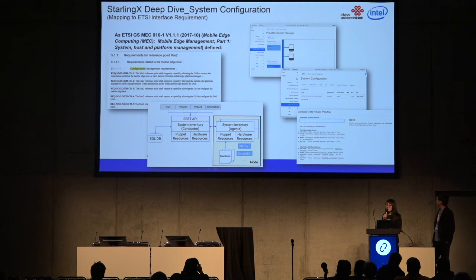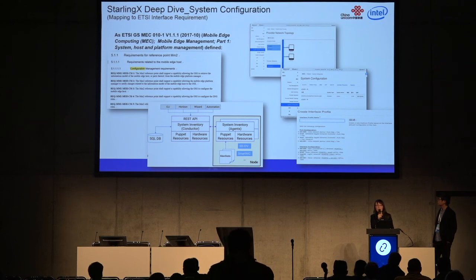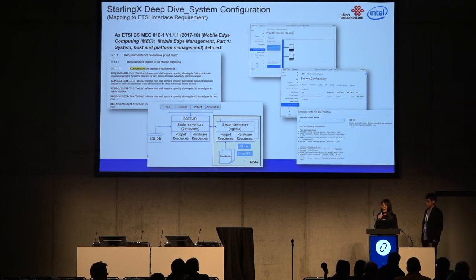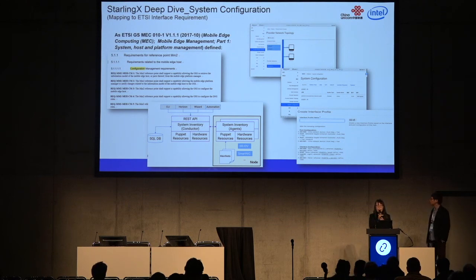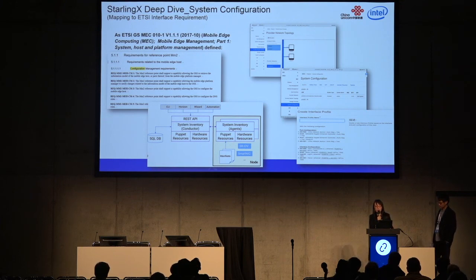This page is about the system configuration service. The system management service provides management functions for deployment and configuration — for example, it can discover new nodes at the edge side and manage installation and configuration parameters such as Neutron config agent parameters. The left picture is also related content from the ETSI MEC spec and the right side shows three UI page snapshots. A very important feature here is the network topology operation UI, which is a missing feature in upstream OpenStack and is very helpful for deployment automation in edge scenarios. The UI can also show many low-level details of network NICs.